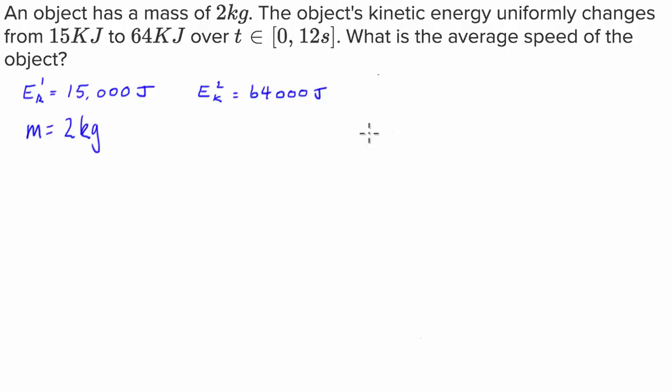So what we're going to do first is figure out how we're going to get to a solution for this question. We have to calculate the average speed of the object. Now it has a uniform change in its velocity, so what we can do is work out the average speed over this time period. We can just get the initial velocity and the final velocity and find the average of them.